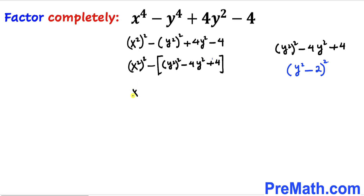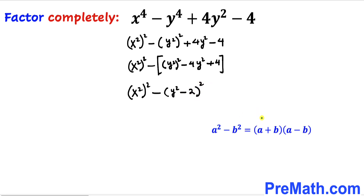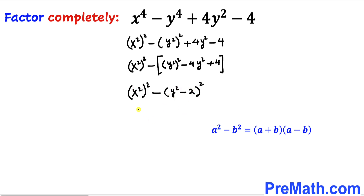So therefore we can write this as (x square) power 2 minus (y square minus 2) whole square. Now let's recall another identity: a square minus b square equals (a plus b)(a minus b) — the difference of two squares equals the product of sum and difference. Calling x square as a and (y square minus 2) as b, we can write this as (x square plus y square minus 2).